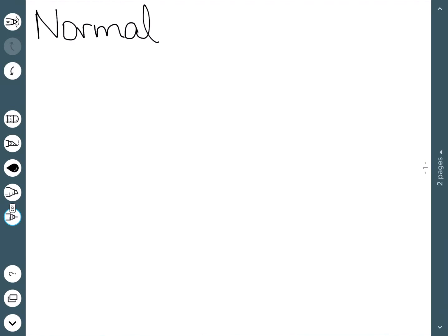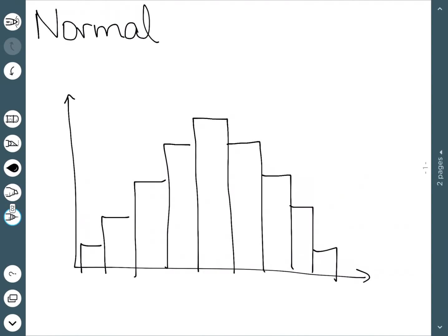The first is called a normal distribution. Here's something that is a normal distribution. The main thing is it peaks right here in the center and then it's symmetric on both sides.